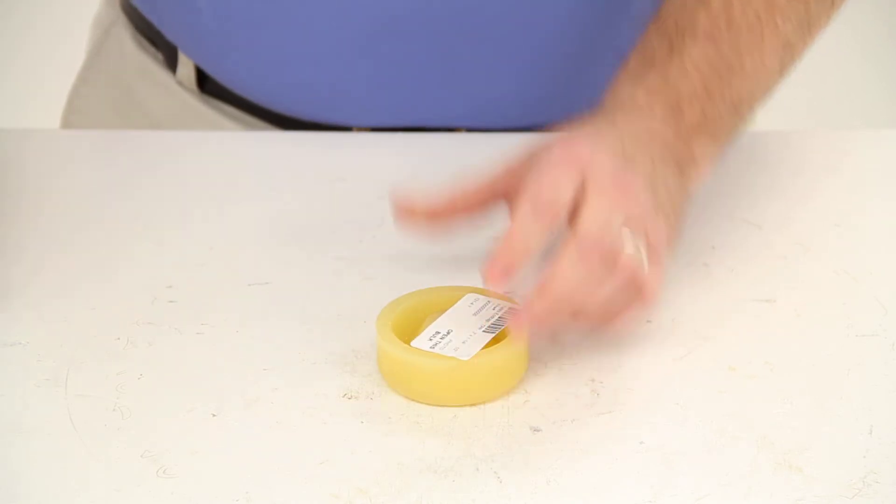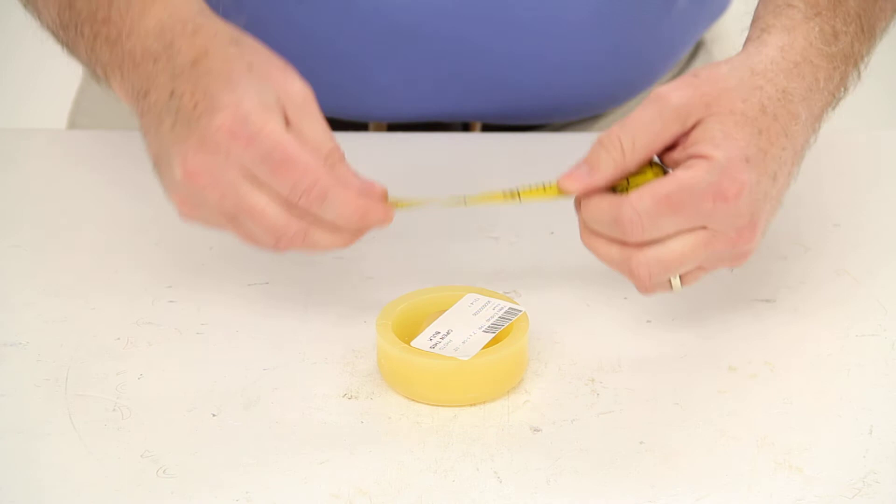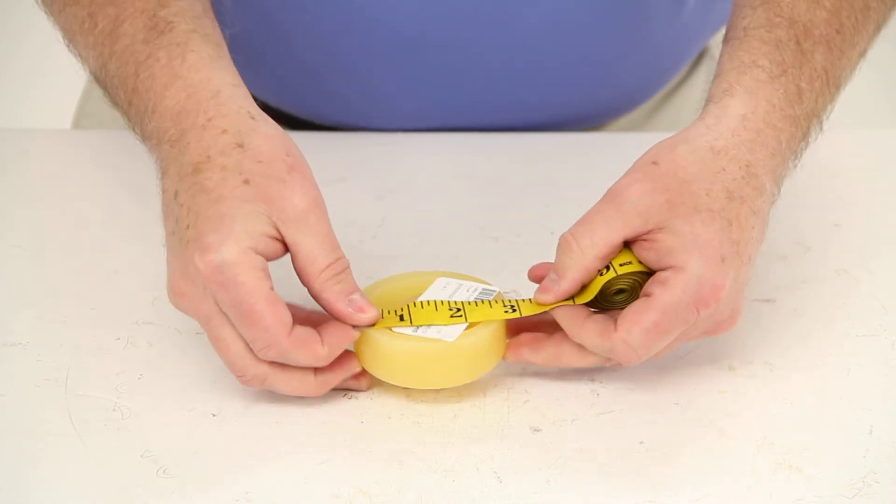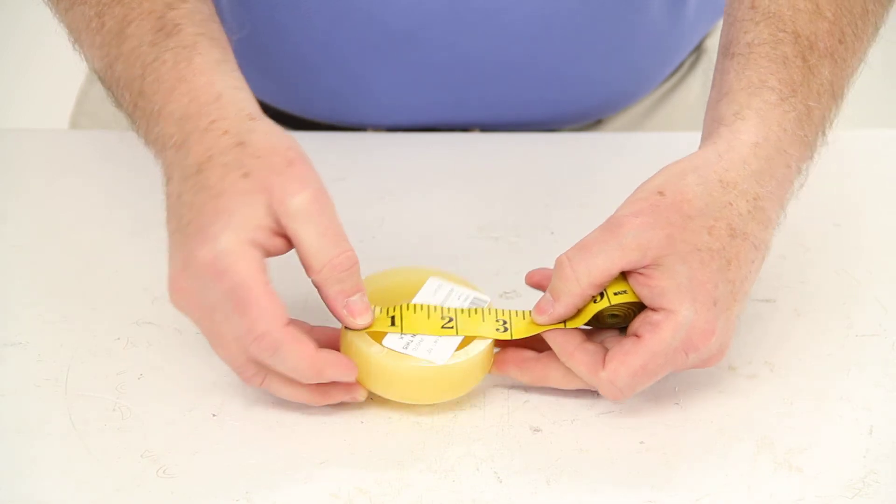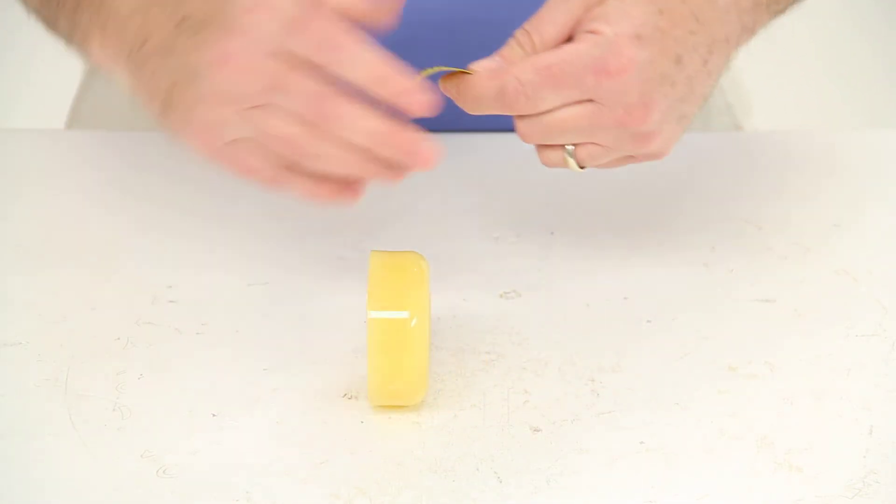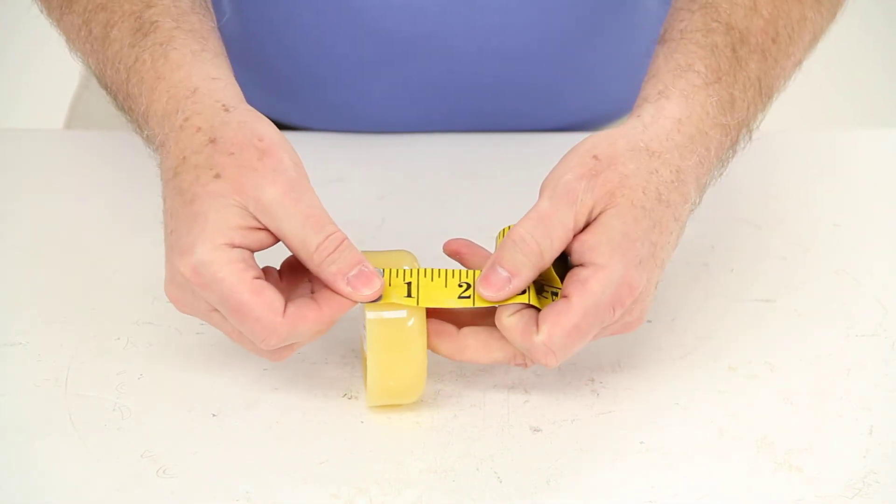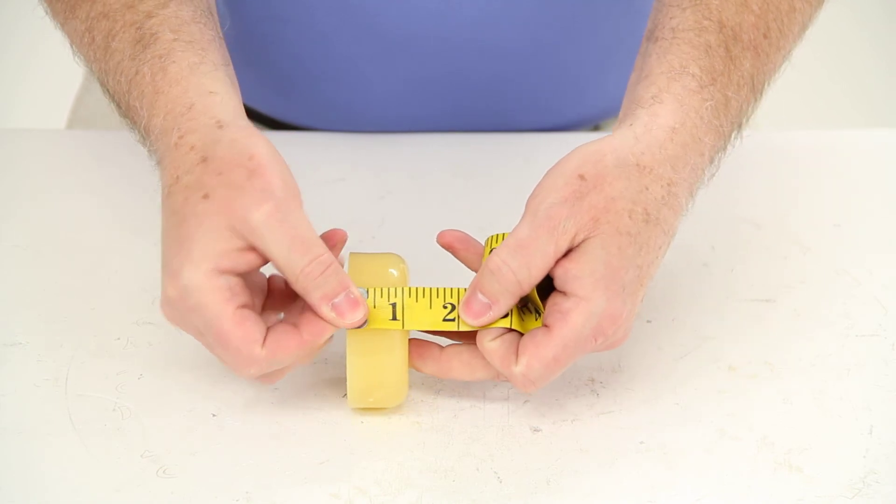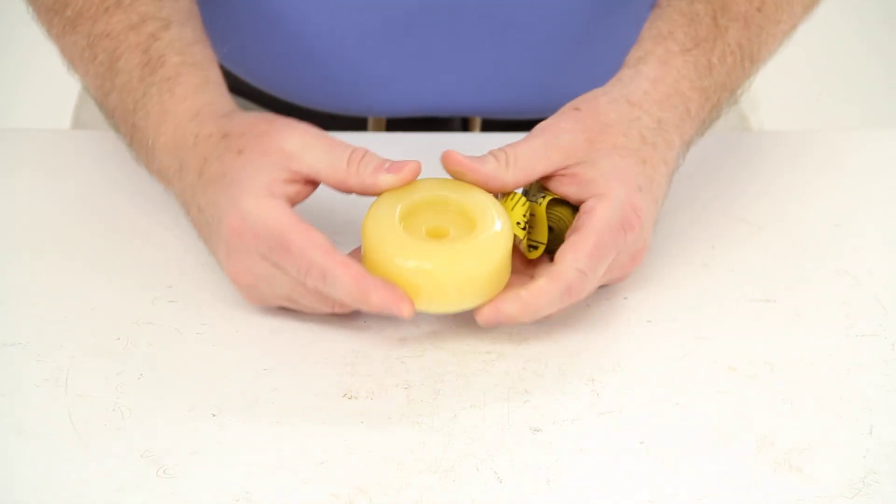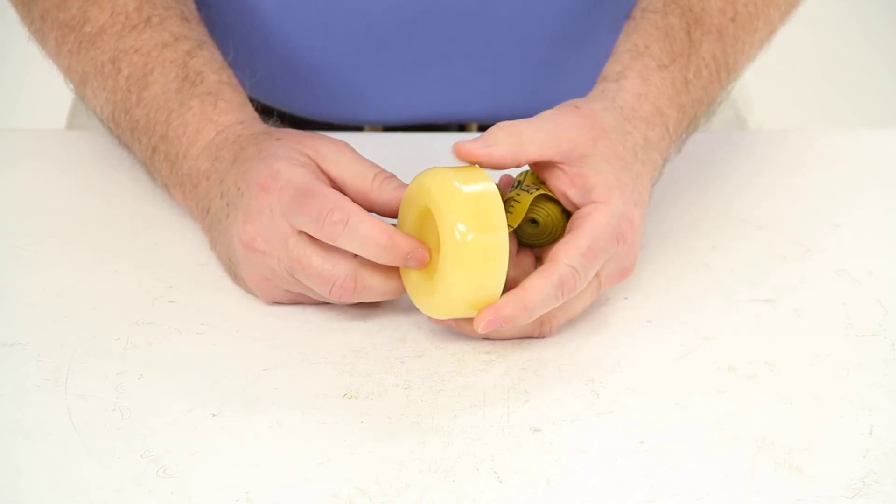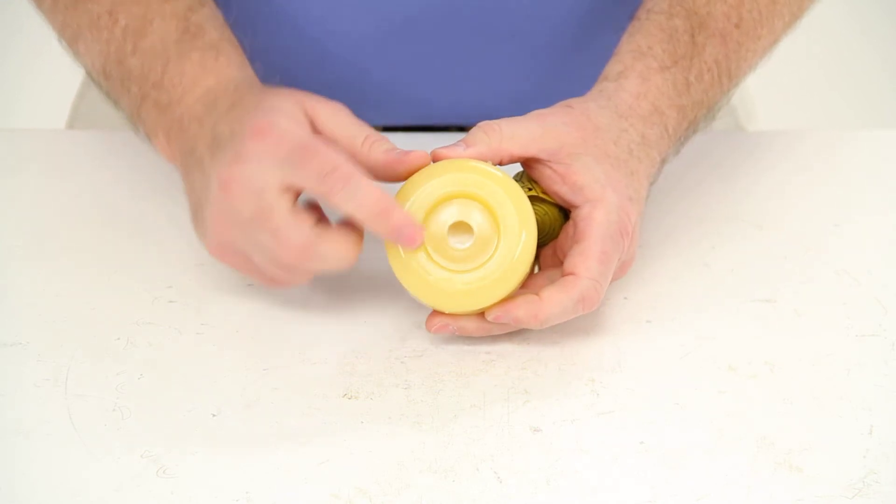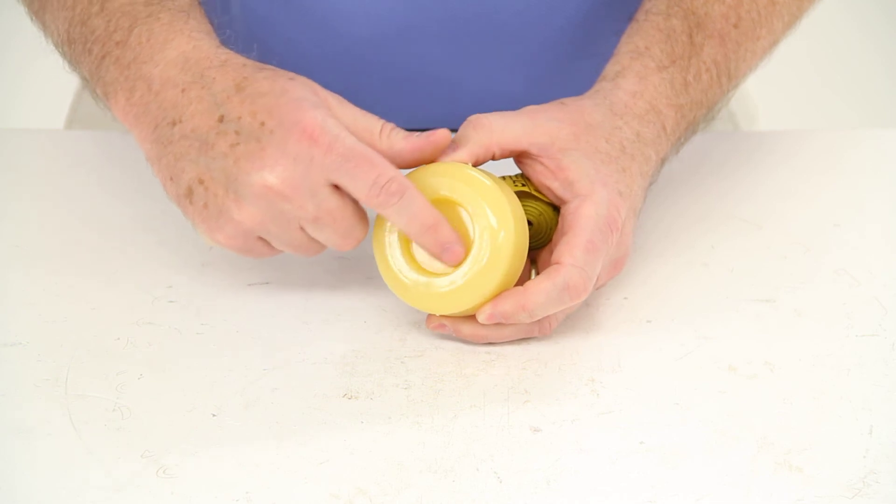We're going to do a few dimensions on this end cap. The overall diameter is 2 3⁄4 inches. The width is 1 inch. And this end cap will mount to a keel, a spool, or a bow roller that is on a 1⁄2 inch diameter shaft.